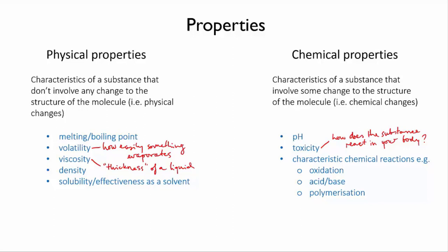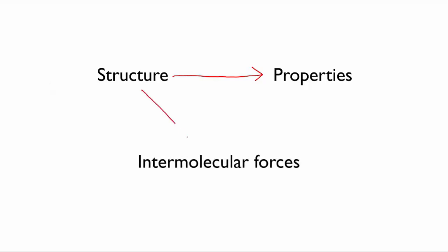So what is it that makes one substance have a different boiling point to another? It is the structure of the molecule that defines all its properties. The types of atoms and the way they're joined together determines how the molecule behaves. Why is this? Well, it all comes down to intermolecular forces.